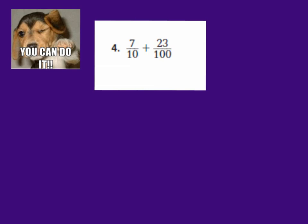Okay friends, let's see if we can try one by ourselves. I would like you to find the sum of 7 tenths plus 23 hundredths. Don't forget, we need to change the denominators if they are not the same. So go ahead and add these two fractions, and then press play when you're ready to go over the answer with me.